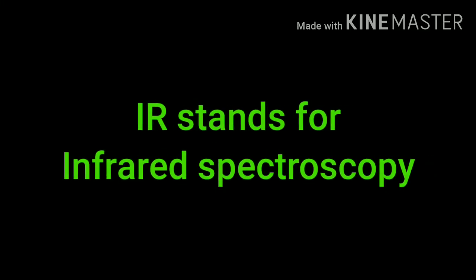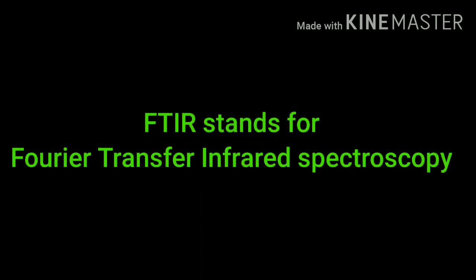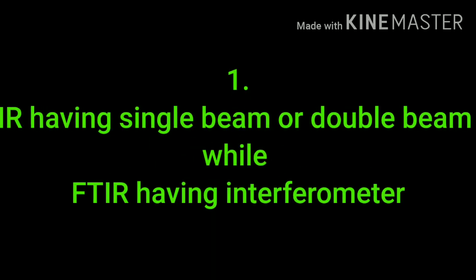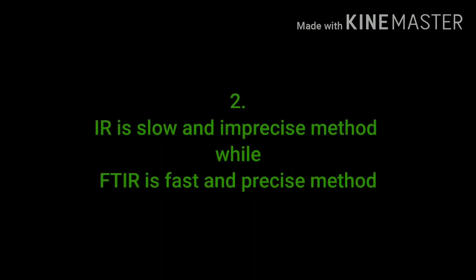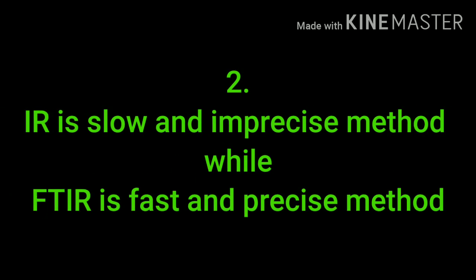IR stands for infrared spectroscopy and FTIR stands for Fourier transform infrared spectroscopy. The first difference is that IR uses a single beam or double beam, while FTIR uses an interferometer. The second difference is that IR is a slow and imprecise method, while FTIR is a fast and precise method.